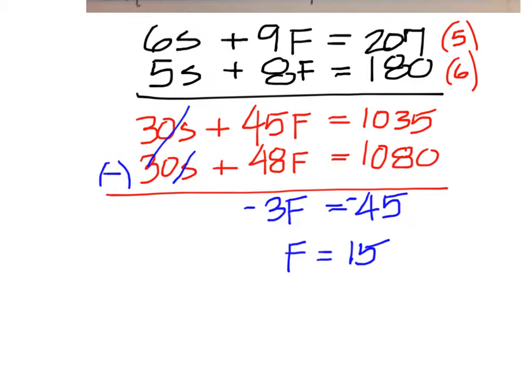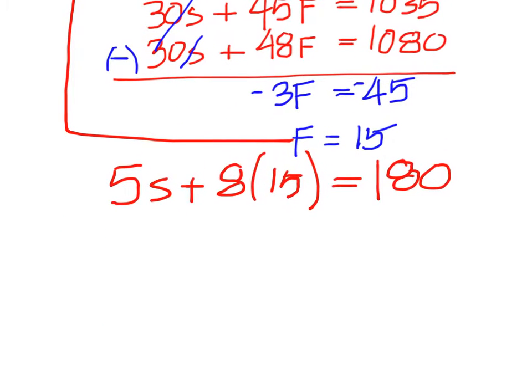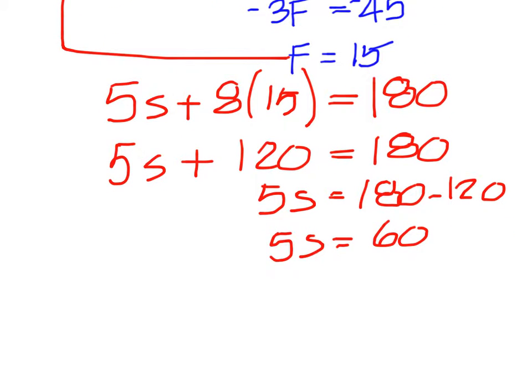With the price of the flower pot we can plug that back into one of the equations. I'm going to use this one. 5S plus 8 times 15 equals 180. 8 times 15 is 120, and we're going to have to move that to the right side. 180 minus 120 is 60, so we come up with 12 for the small tree.